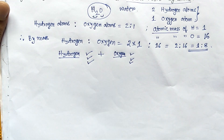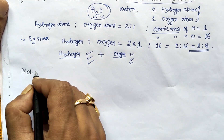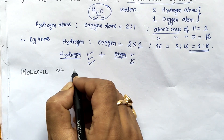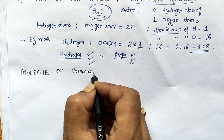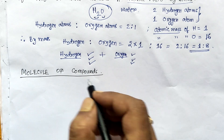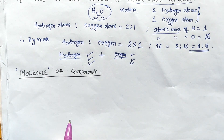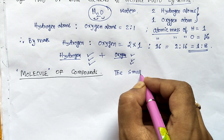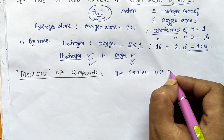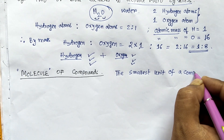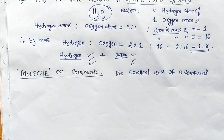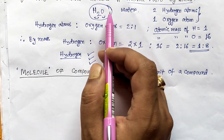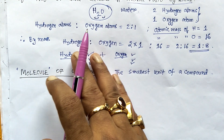Next we will discuss molecules of compounds. The term molecule suggests the smallest unit of a compound. Any molecule of a compound exhibits all the properties of that compound. For example, an H₂O molecule exhibits all the properties of water.